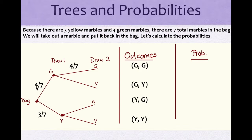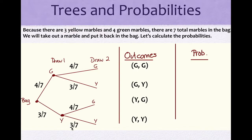Since you put the marble back in the bag, the probability of drawing a green is still four out of seven. If you drew a green first, the probability of picking a yellow is still three out of seven. Down here, the same principle applies: you draw a yellow marble, which is three out of seven, put it back, and there are still four green marbles out of seven, and still three yellow marbles out of seven.